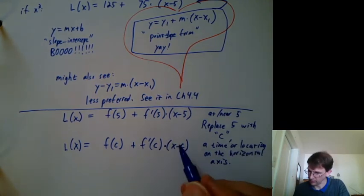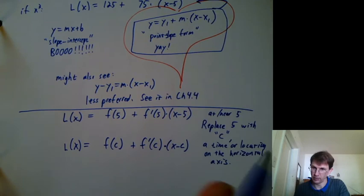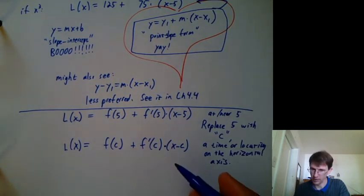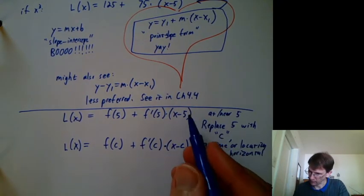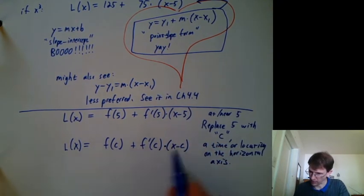In particular, this c value is a location on the horizontal axis. In later chapters in integration, the capital C we're using is more like a vertical thing. So we don't have to just use 5 anymore. We can use c.